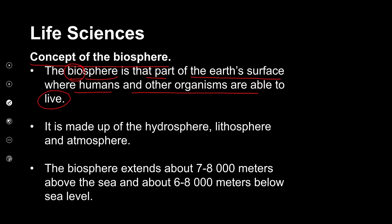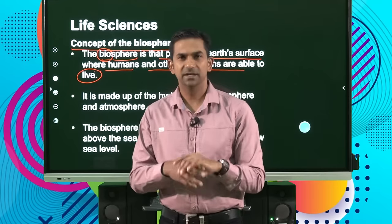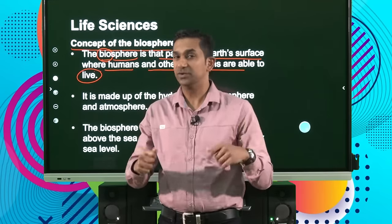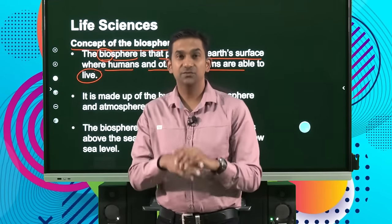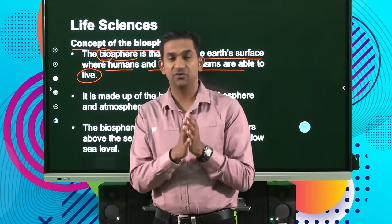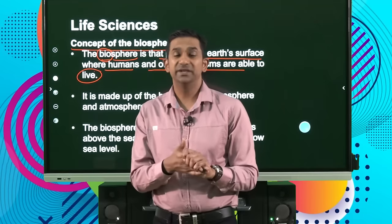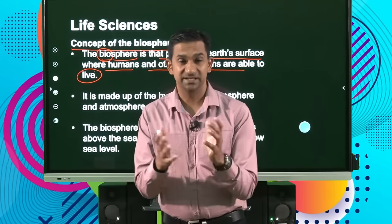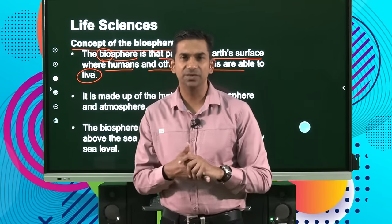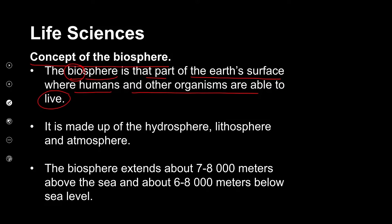When we talk of the earth, we know that the earth supports a variety of different organisms and life forms. The earth is regarded as a sphere, so bio refers to the living organisms. If we understand the context of interaction of organisms in the environment, we would need to unpack where these living organisms exist and how they interact with the environment. The biosphere is made up of the hydrosphere, the lithosphere, and the atmosphere — these three components form the important parts of the biosphere.